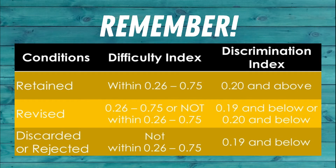An item can be retained if the difficulty index is within the range of 0.26 to 0.75 and its discrimination index is 0.20 and above. An item needs to be revised if the difficulty index is within 0.26–0.75 and the discrimination index is 0.19 and below, or the difficulty index is outside 0.26–0.75 and the discrimination index is 0.20 and above. An item needs to be discarded or rejected if the difficulty index is outside 0.26–0.75 and the discrimination index is 0.19 and below.